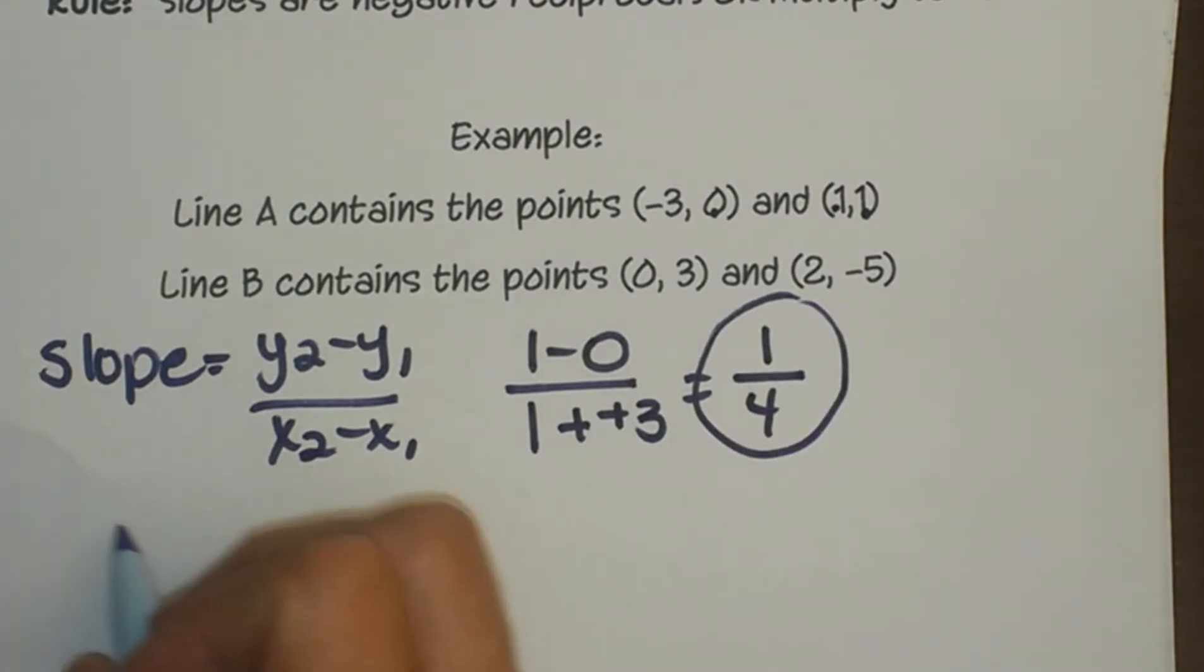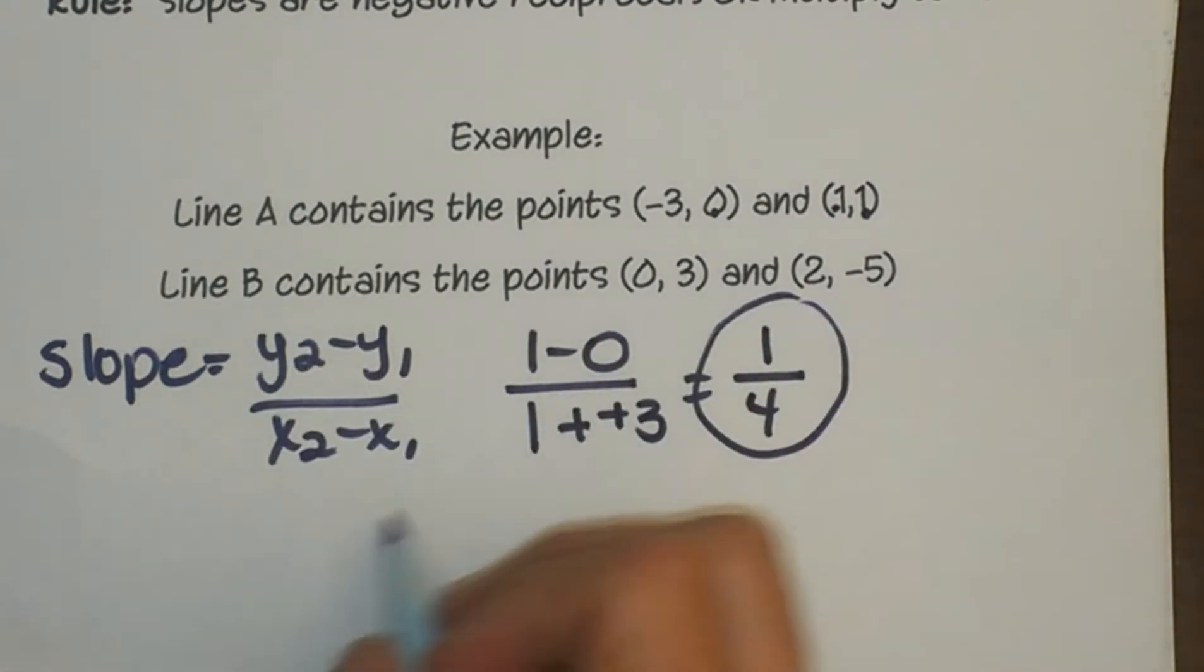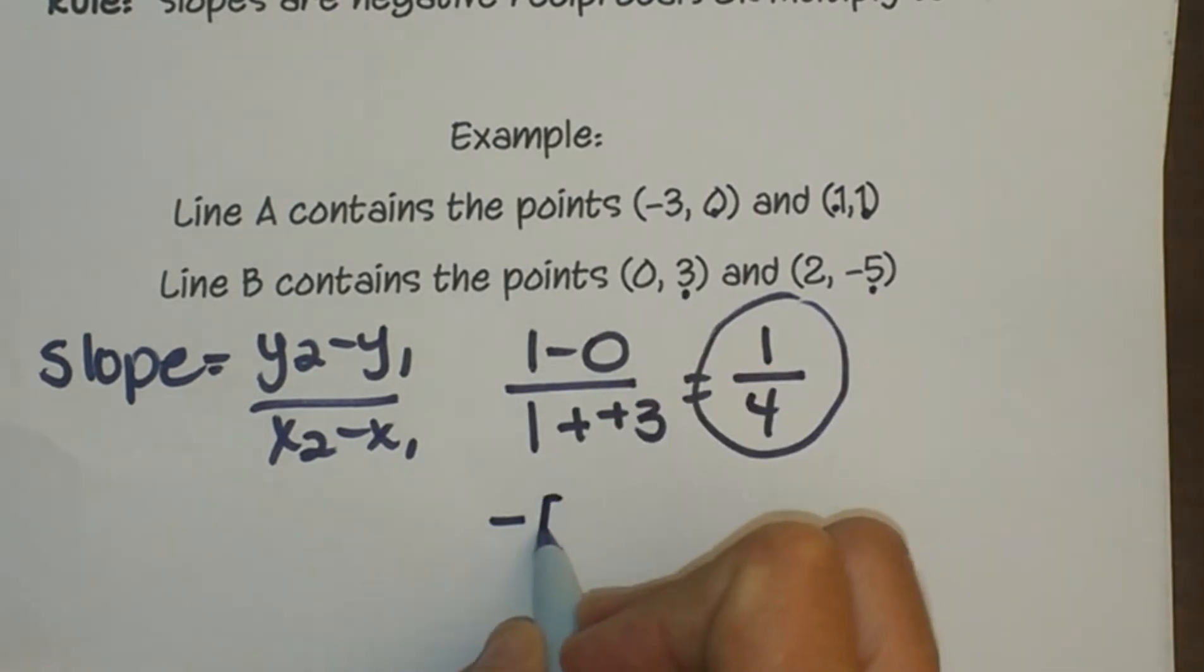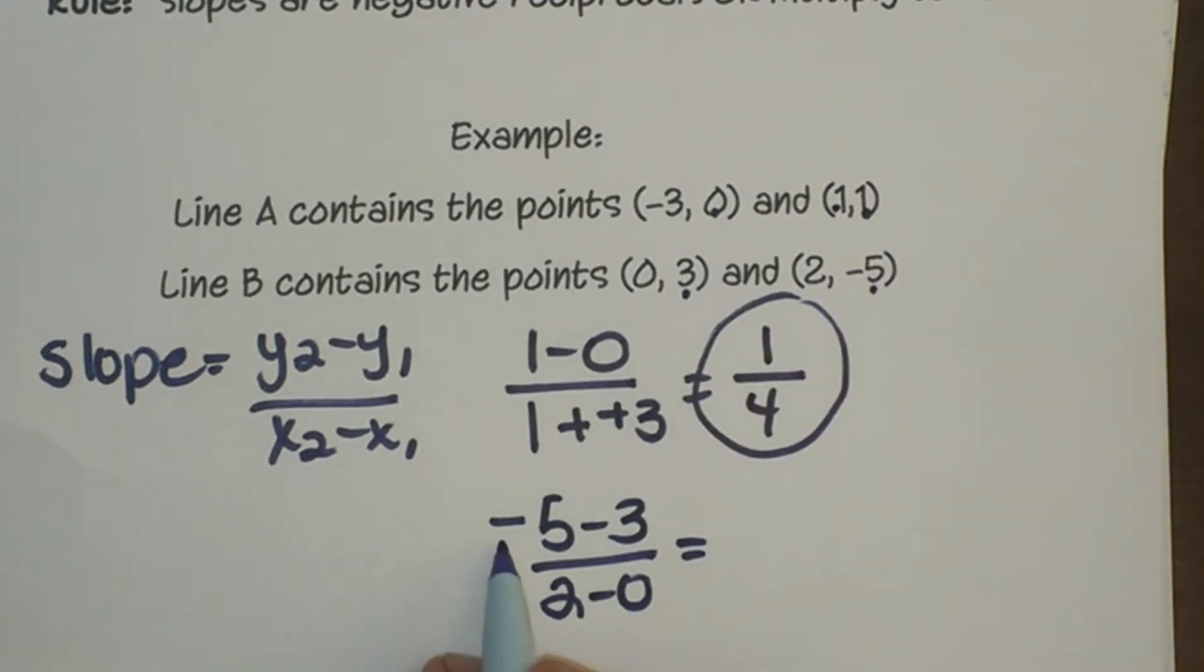Now let's find the slope of line B. I'm going to take y minus y, so negative 5 minus 3 over 2 minus 0. And let's subtract that: negative 5 minus 3 is negative 8 over 2 which is negative 4. And that is the slope of line B.